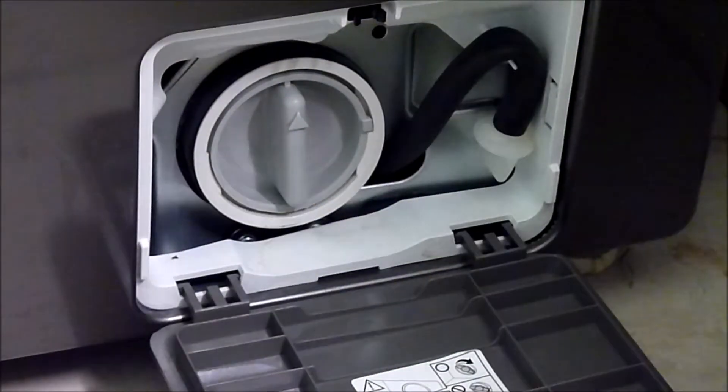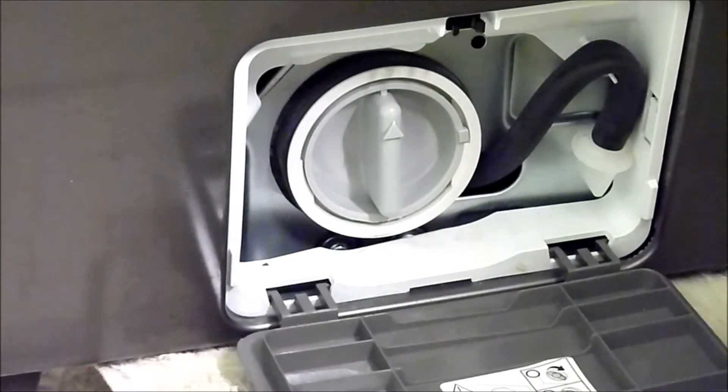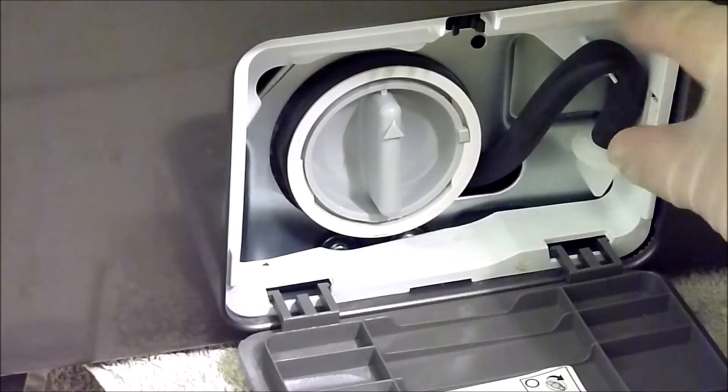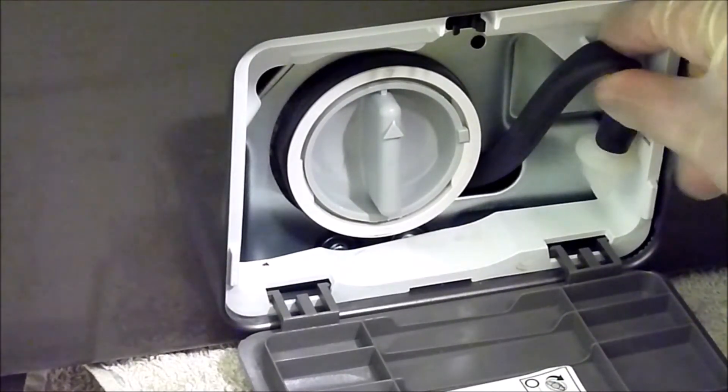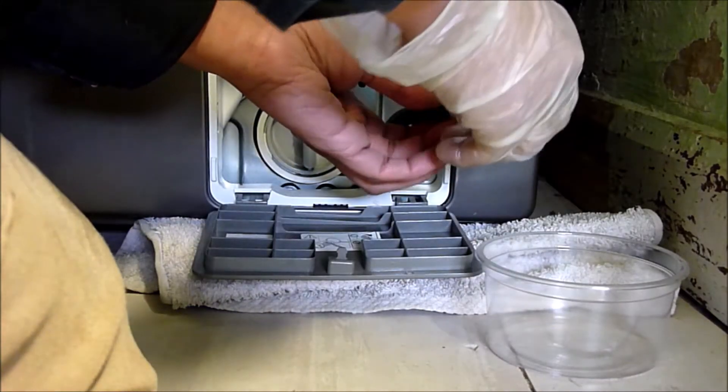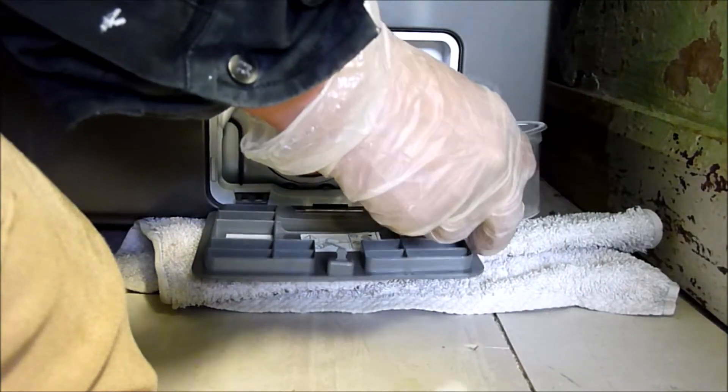Ensure you have a shallow dish and cloth, then pull out the drain hose, remove the cap, and drain the washing machine.